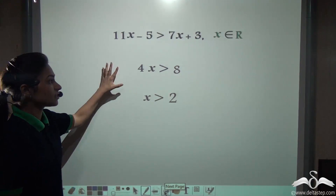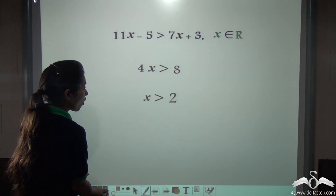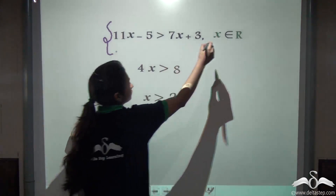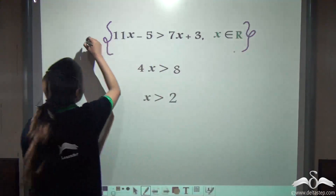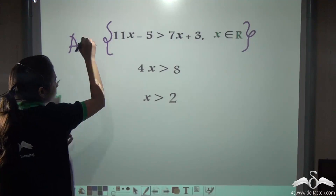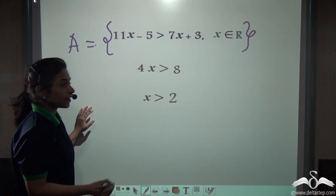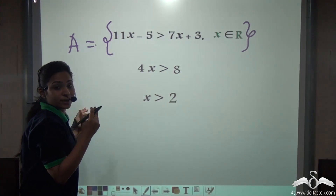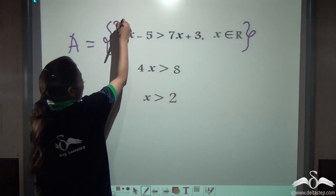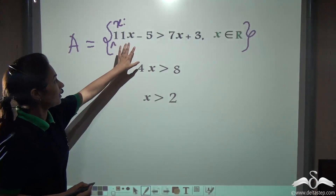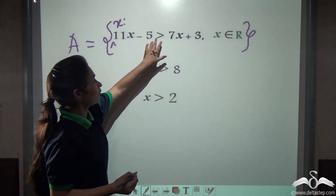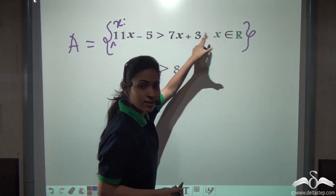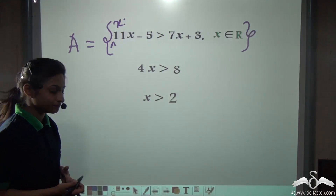So this is how you solve such inequations. Now, what if I put this in a set and name this set as A? I cannot write it just like this. If I want to write it in set builder form, I need to write: x such that 11x minus 5 is greater than 7x plus 3 and x belongs to R. This is how we write it in set builder form.